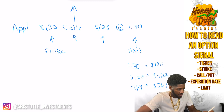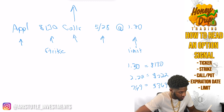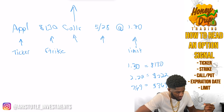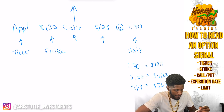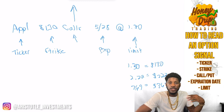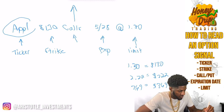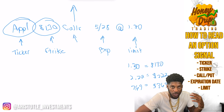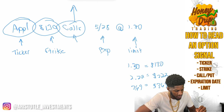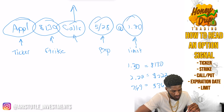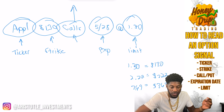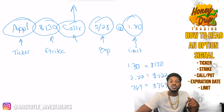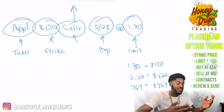This will also be the ticker symbol. So that is how you read an option signal. You have the ticker, the strike price, the call or the put. Remember: calls bet on the stock to go up, puts bet on the stock to go down. Then we have the expiration date, and then the limit price, which will always be times 100. Now we want to place the option signal.